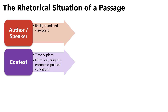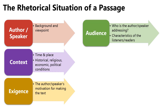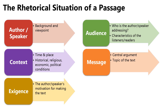And the context includes the historical, religious, economic, and political conditions that are occurring in the time in which the passage was written. Next is the exigence — who exactly is the author or speaker's motivation for making the text, or the driving force behind the creation of this piece? Next is the audience. Who exactly is the author or speaker addressing, and what are the characteristics of the listeners or readers? Do they have some sort of shared identity that binds them together?